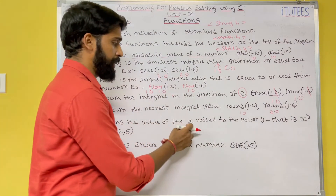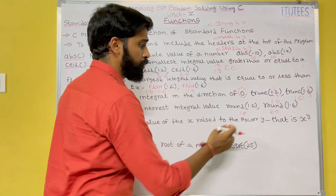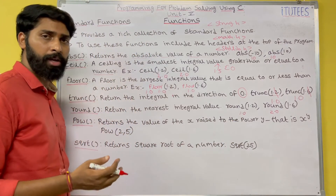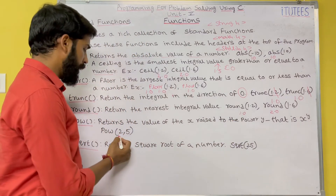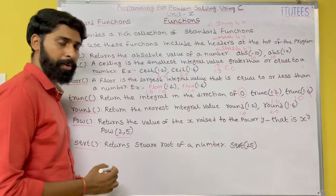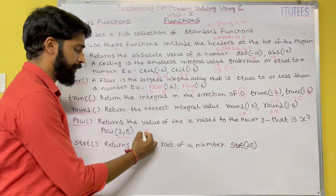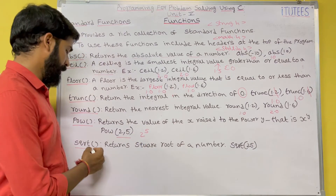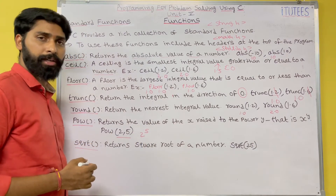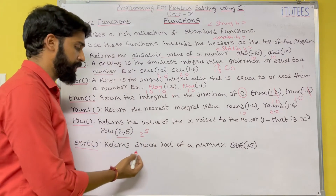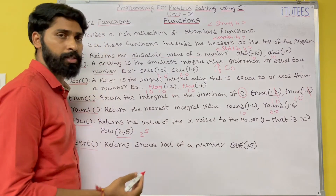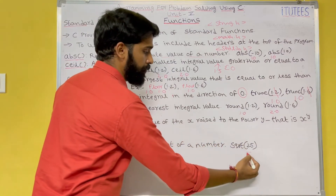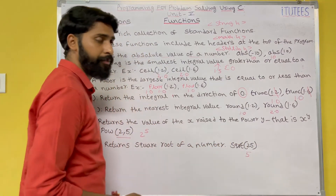Next is pow() — it returns the value of x raised to the power of y, that is x^y. So pow(2, 5) returns 2 to the power 5. Then sqrt() returns the square root of a number, so sqrt(25) returns 5.